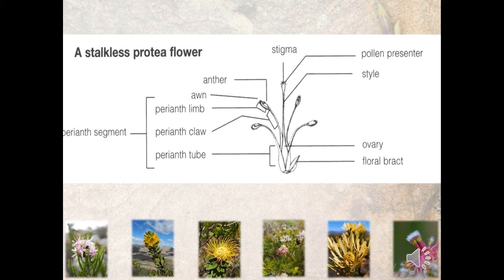This is an individual Proteaceae flower, subtended by a floral bract at the base. You have the perianth segments — the tepals — which are divided into three parts: the perianth tube at the bottom, the perianth claw in the middle, and the perianth limb at the very top. The anthers, which are the male part of the flower, are actually fused into the perianth and sit on top of the perianth segment.